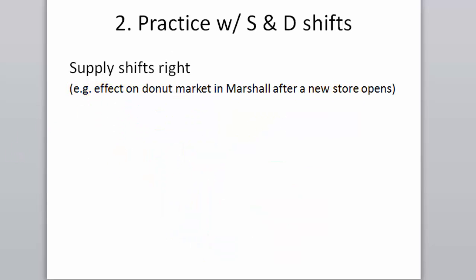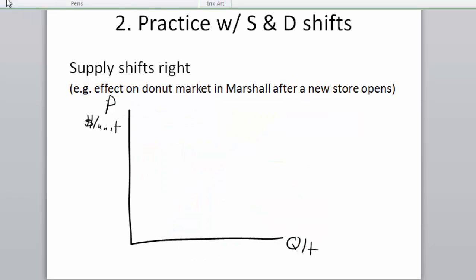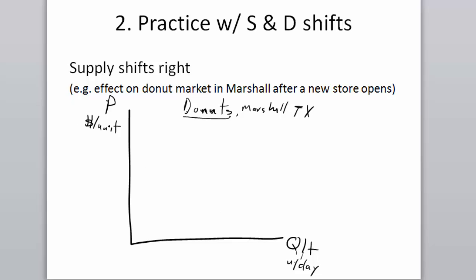Let's move on and think about the alternative supply shift here. Let me draw our basic graph again. Quantity per time period, price, dollars per unit. You want to label your graph. Here we're going to do the effect on the donut market in Marshall. So let's label this donuts. This would be quantity per day, units per day. And the price per unit, the price per donut.